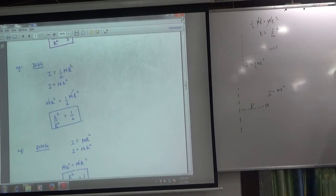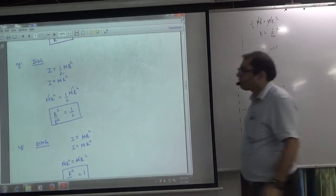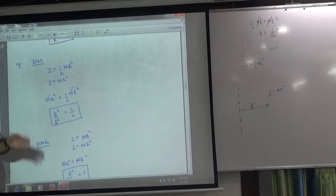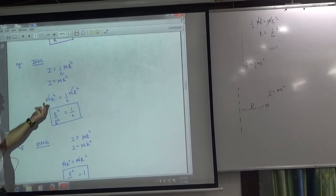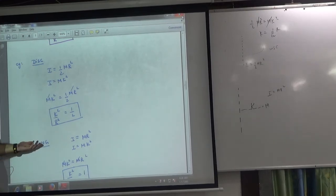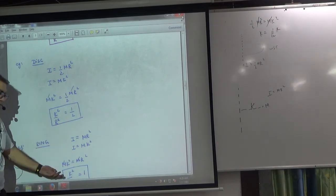Now, like the disc. What is the disc moment of inertia? 1/2 MR². And in the gyration form, MK². So equate these two. What is k²/r²? 1/2. What is the ring? The ring moment of inertia is MR². And in the gyration form, MK². So what is k²/r²? One.